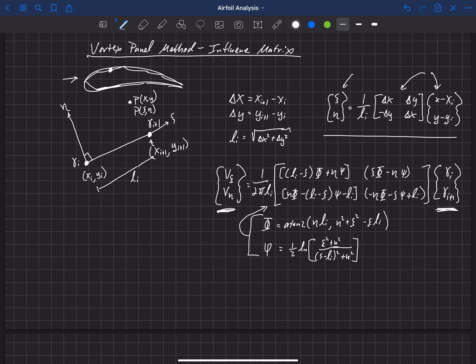And then now that we know the velocity in the xi and eta directions, we can use that to get the velocity in the x and y directions in our global coordinate system. And that is just equal to 1 over L sub i times delta x, we've got a minus delta y here, a delta y, and a delta x, times V xi and V eta.